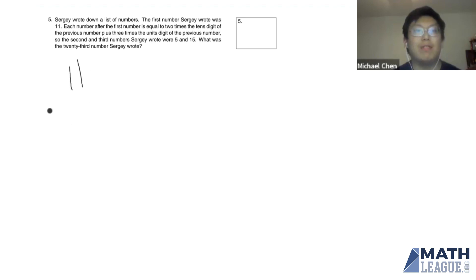Now, how do we get to five? It's two times the tens digit, plus three times the ones digit, so that gives us five.